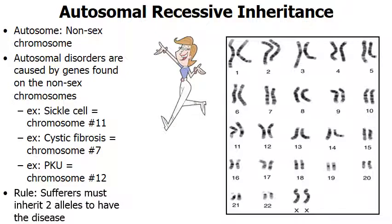The rule for autosomal recessive inheritance is that sufferers must inherit two copies of the defective gene — two alleles for the recessive disorder — in order to be affected. That means healthy is dominant and the disorder, whether it's sickle cell, cystic fibrosis, or PKU, would be recessive. We use lowercase letters to illustrate recessive alleles and capital letters to illustrate dominant alleles.